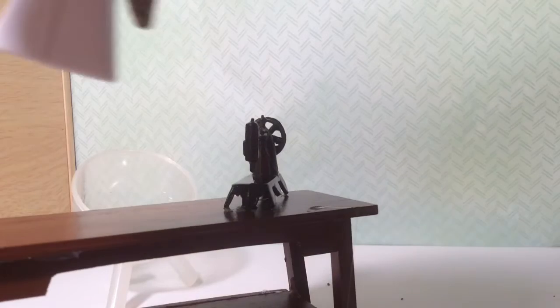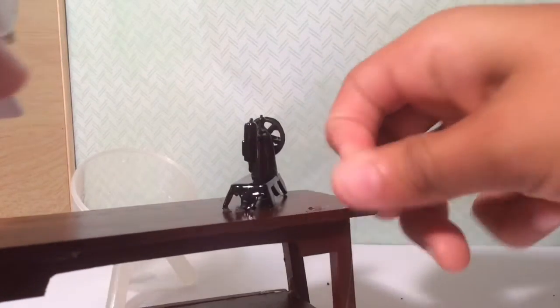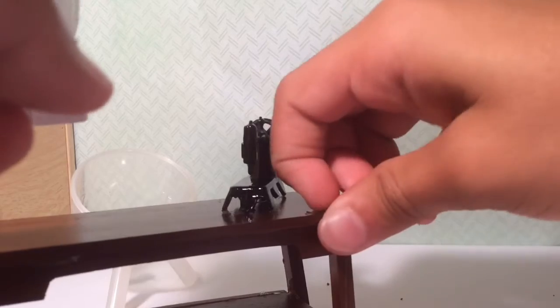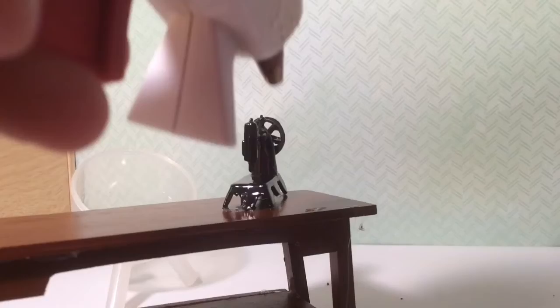So first you hot glue the sewing machine to the table. Not too much because sometimes it can rip off the sealant and the wood can just start chipping.